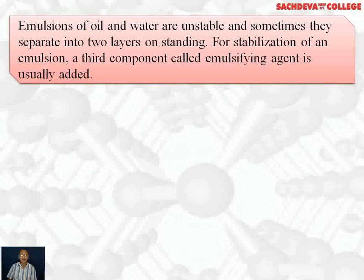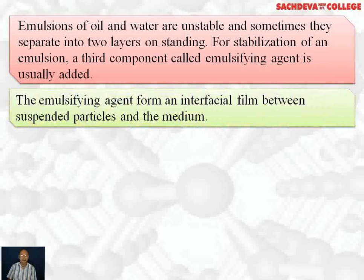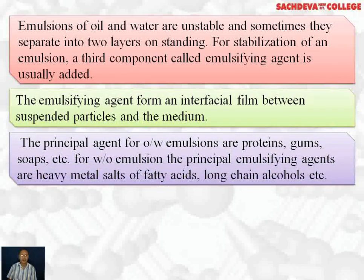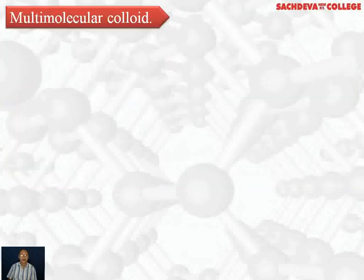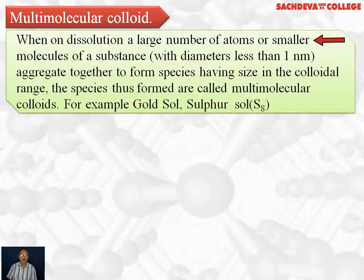Emulsions of oil and water are unstable and sometimes separate into two layers on standing. For stabilization, a third component called an emulsifying agent is usually added. The emulsifying agent forms an interfacial film between suspended particles and the medium. For oil-in-water emulsions, the principal agents are proteins, gums, and soaps. For water-in-oil emulsions, the principal agents are heavy metal salts of fatty acids, long-chain alcohols, etc.